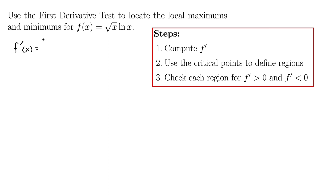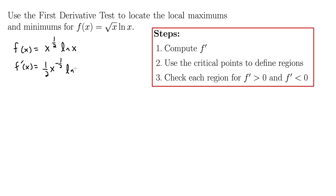To do that, we have three steps. First, we compute the derivative. We'll need the product rule here. Let me first rewrite f(x) as x to the one-half times natural log x to make it a little easier. Now we have our product rule. So f prime of x — this is the product a times b — and the product rule is a′b + b′a. So a′b is one-half x to the negative one-half times natural log x, plus b′, which is the derivative of natural log x: one over x, times a, which is x to the one-half.